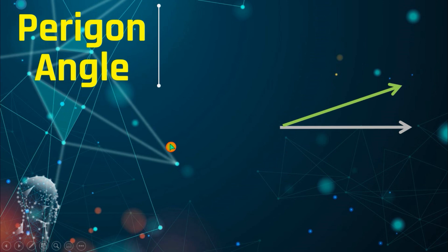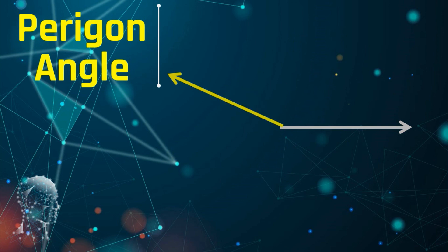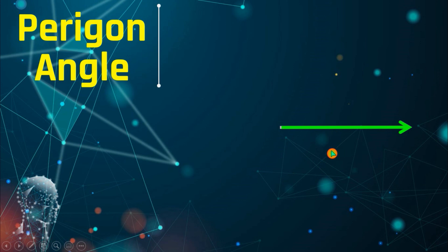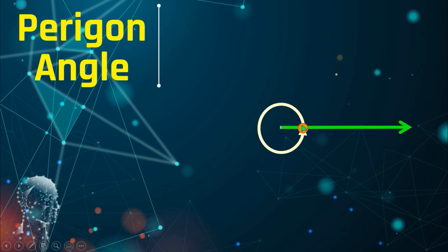We call an angle a perigon if the terminal side completes its full rotation — that is 360 degrees. In some books, it is also called a revolution or full rotation.